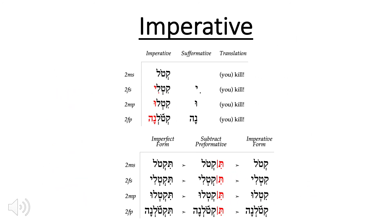The imperative in the Qal stem is only found in the second person. It is formed simply by dropping the prefix off of the imperfect, keeping everything else the same. So the second masculine singular tiqtol drops the tav plus the hiriq and simply remains as qtol, keeping the shva under the qof. Except in the second masculine plural — tiqtolu — where the shva under the qof is silent. Once the tav plus hiriq is dropped, the shva under the qof by rule must become vocal, but then we have two vocal shvas, which is not allowed. So instead, the first shva becomes a hiriq and the second shva becomes silent: qitlu. We drop the prefix off the front to form the imperative, keeping whatever suffix might be present from the subject marker.